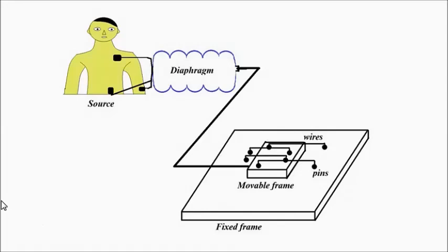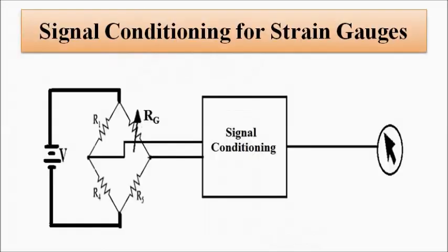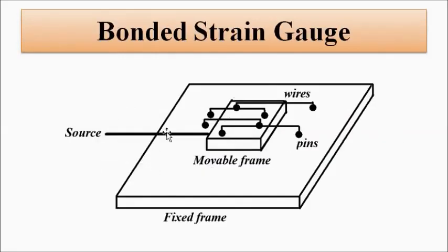After the strain gauge setup undergoes compression or expansion due to movement, the resulting change in resistance must be converted into a suitable voltage or current signal. For that, a Wheatstone bridge setup is used, where the strain gauge can form either all four arms of the Wheatstone bridge or just one arm of the Wheatstone bridge — taking into account a particular wire grid. Both configurations can be used.